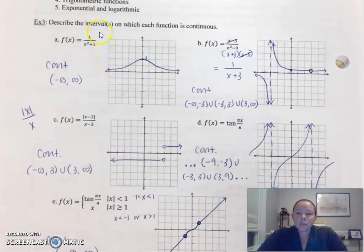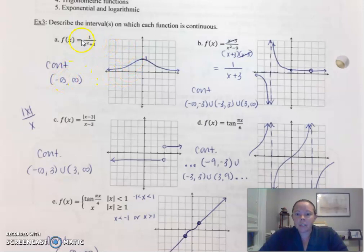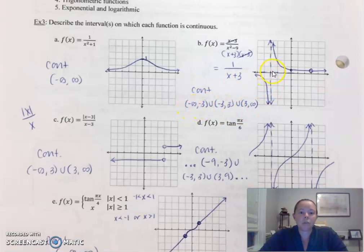For these examples, I've graphed the functions and wrote the continuity using interval notation. For this one, I reduced it and graphed the function. Continuity: negative infinity to negative three, union negative three to three, and then three to infinity.